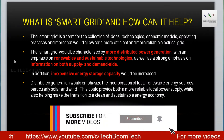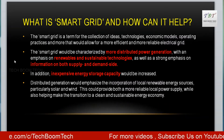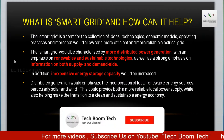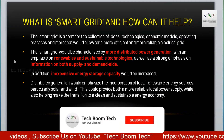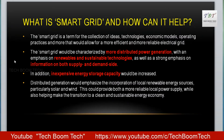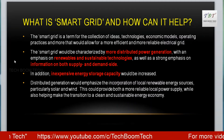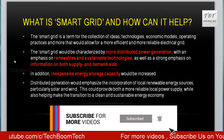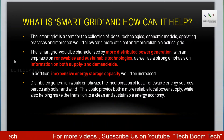We can see here in the first line a definition: smart grid is a term for the collection of ideas, technologies, economic models, operating practices, and more that would allow for a more efficient and more reliable electric grid. Distributed generation focuses on the incorporation of local renewable energy sources, particularly solar and wind, which can be easily incorporated into housing and local communities. This increases the reliability of the local power supply and helps in the transition to a clean and sustainable energy economy.